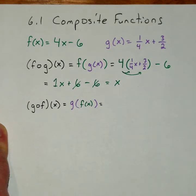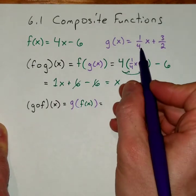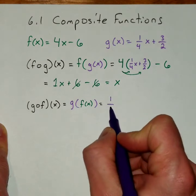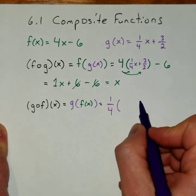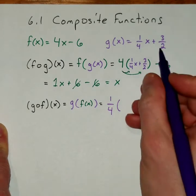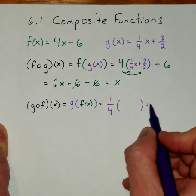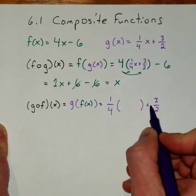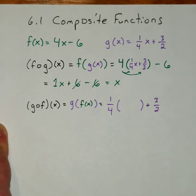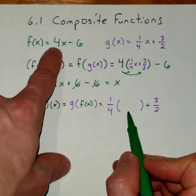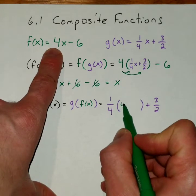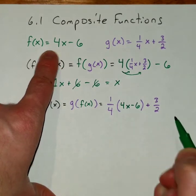So I'm going to start off with the outer function, which is ¼. The x becomes the set of parentheses, and then we have a plus 3/2. Inside that set of parentheses, we're going to use the inner function, which is f of x.